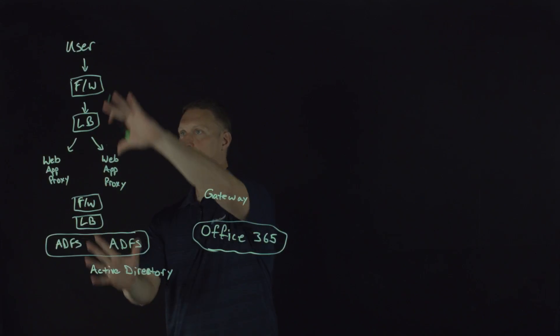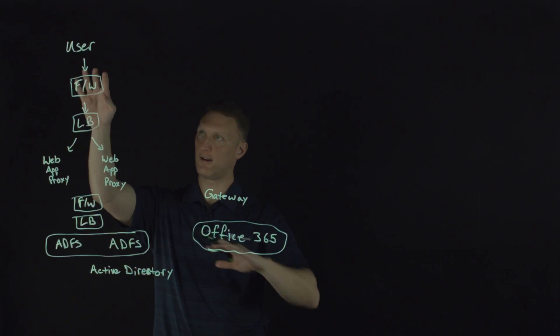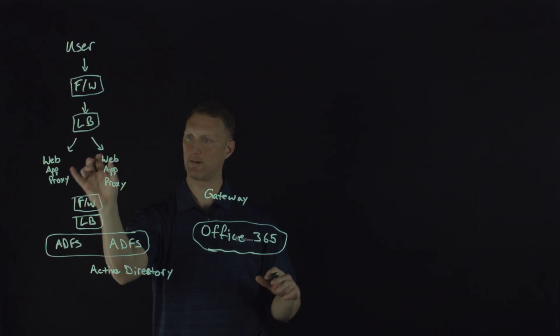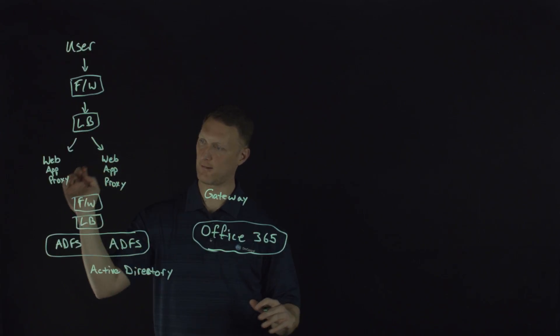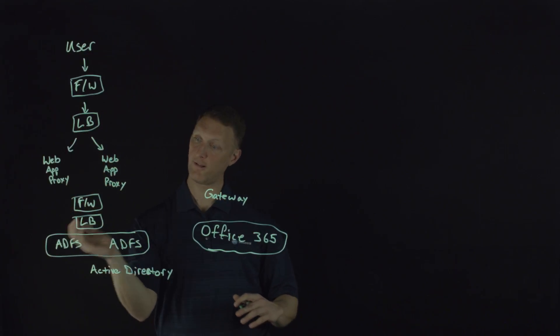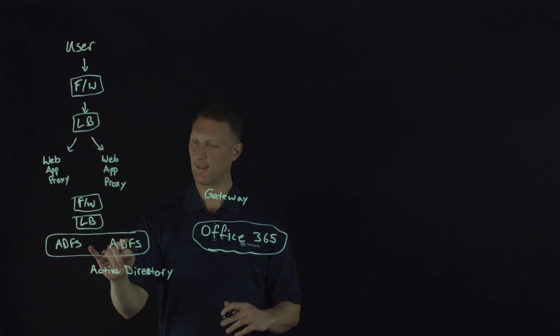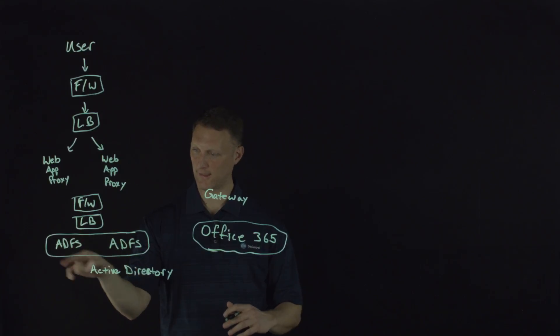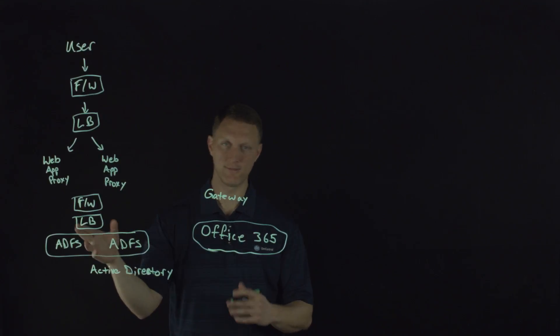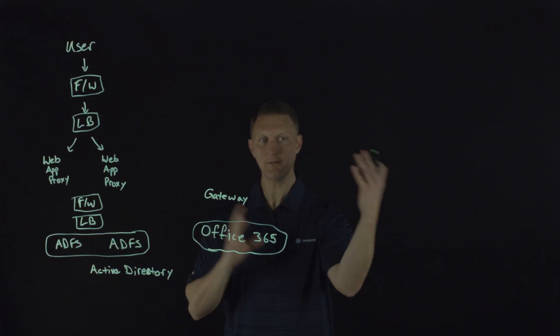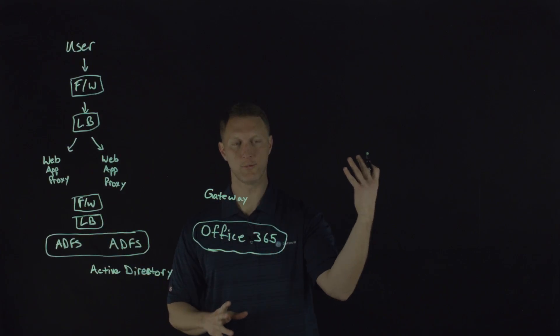You can tell from the architecture here, you're going to need a firewall, a load balancer, web app proxies, another firewall, another load balancer, and then you're back into the Active Directory stuff. So let me show you how you can do this if you want to do it on the F5 side of the house.